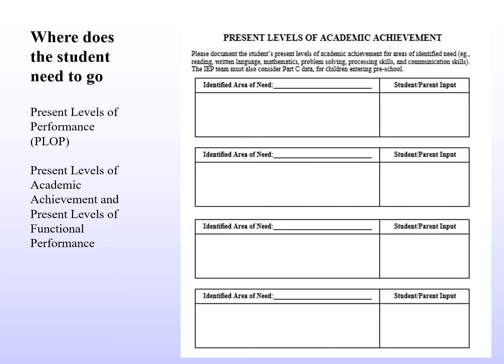Once we know where the student is, we look at where they need to go. The present levels of academic achievement cover areas the student is struggling with — reading, writing, math, science, and other academic areas. Functional performance covers things like organization and non-academic skills. It's important to include student and parent input on all these areas of need, because what we see in the classroom can be quite different from what parents see at home.